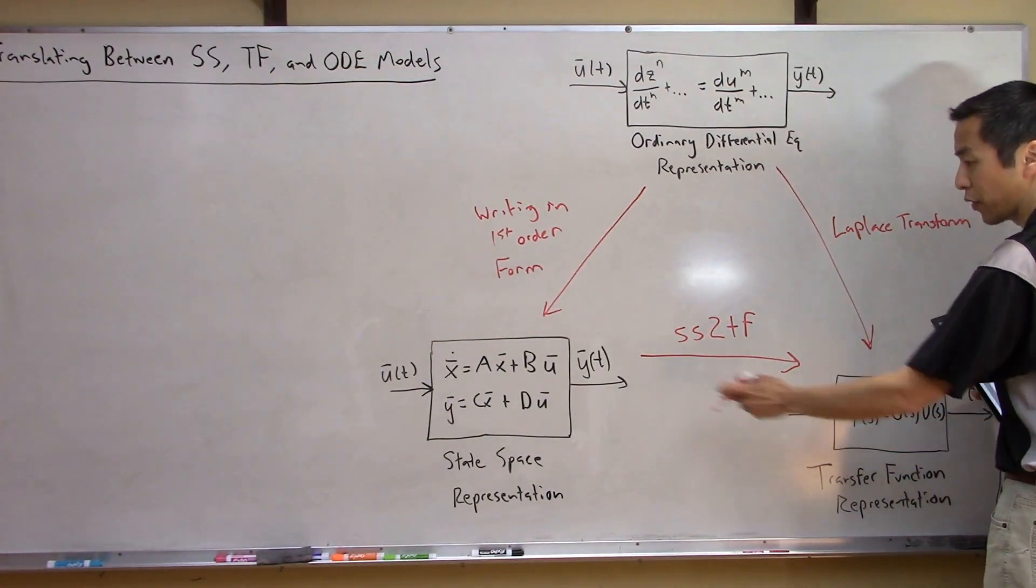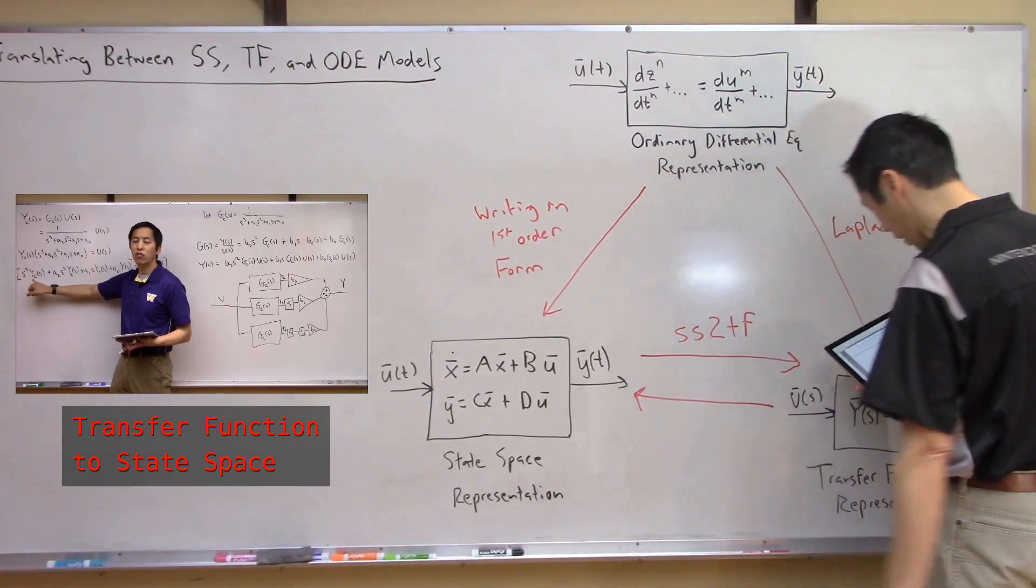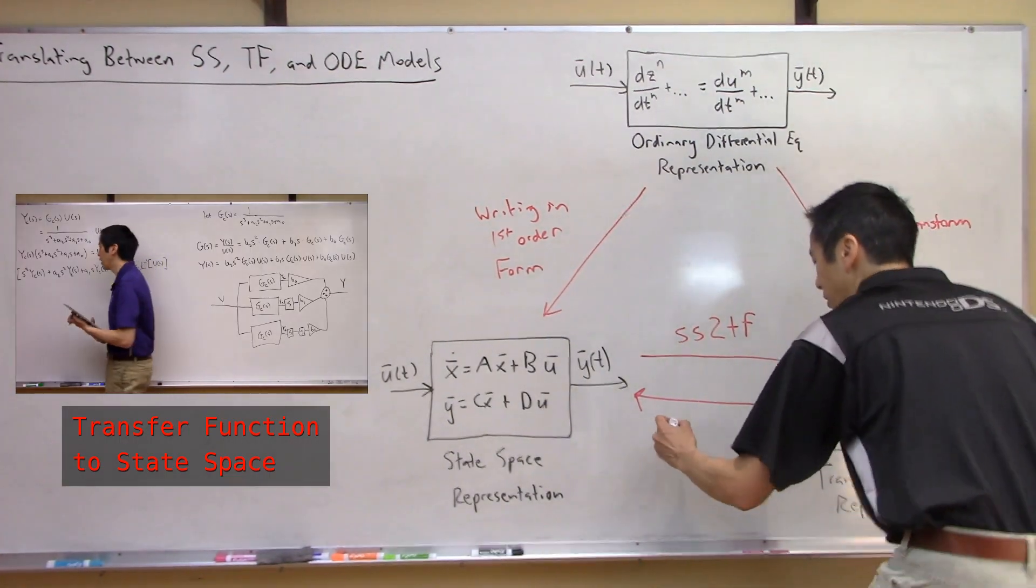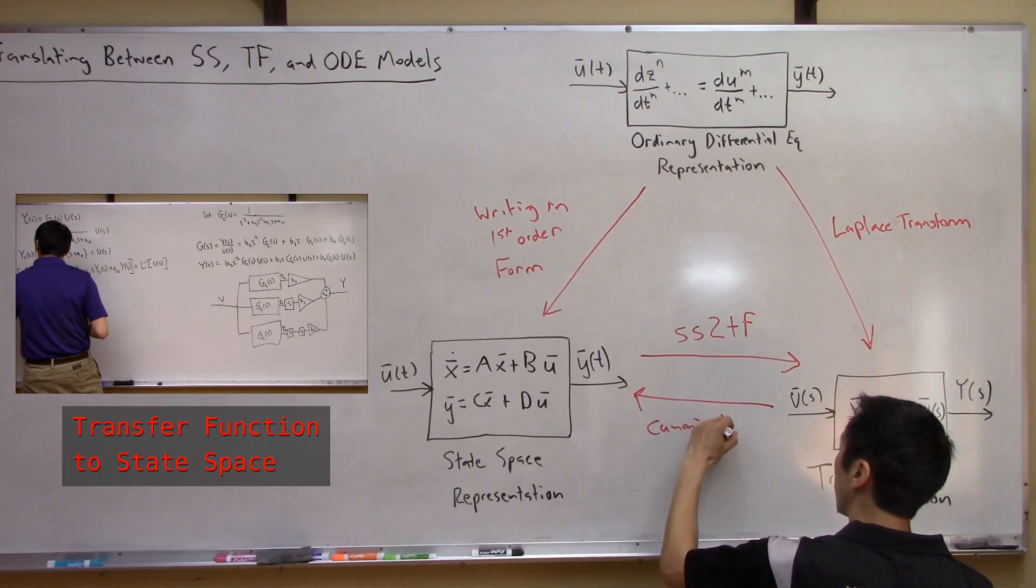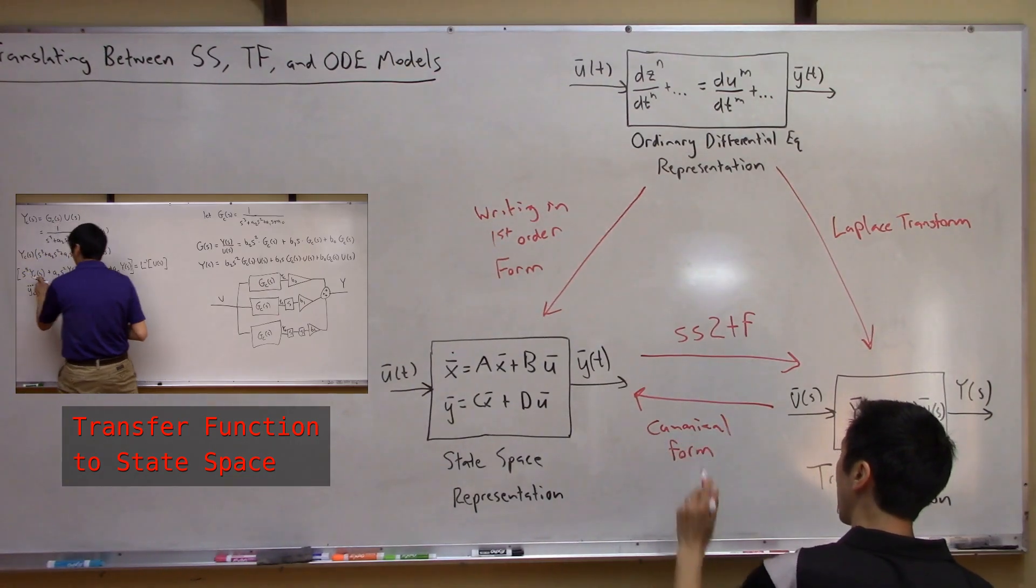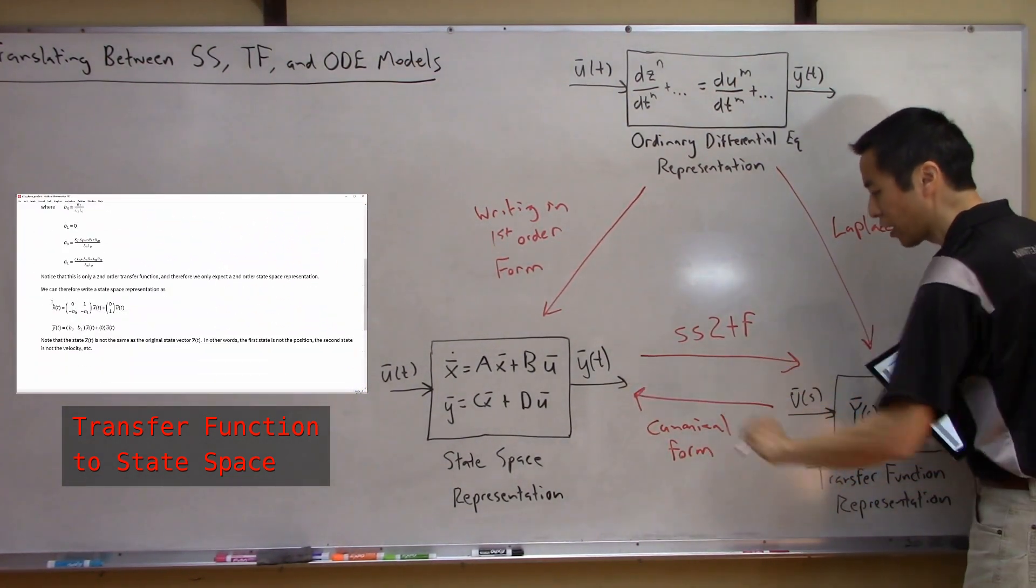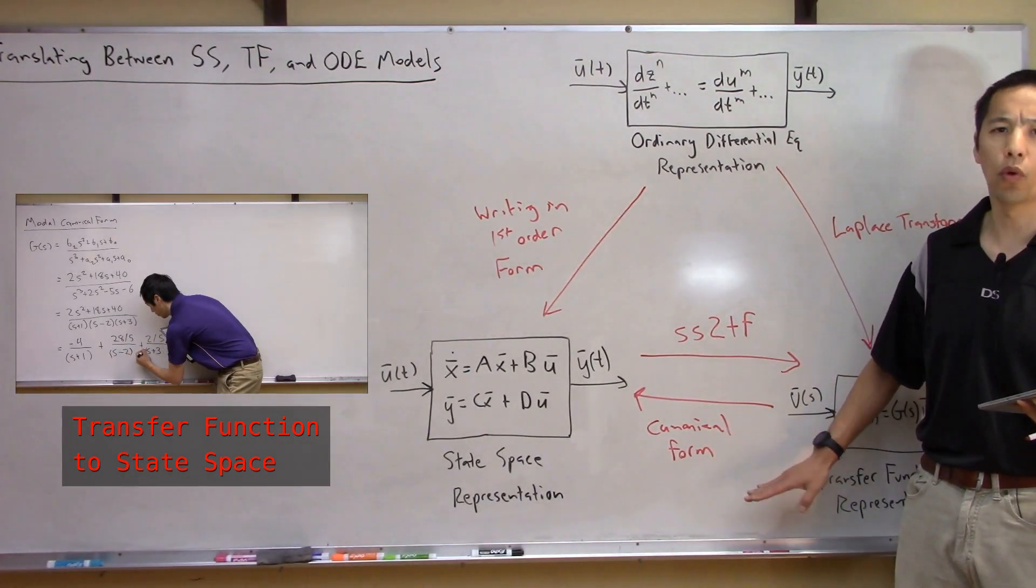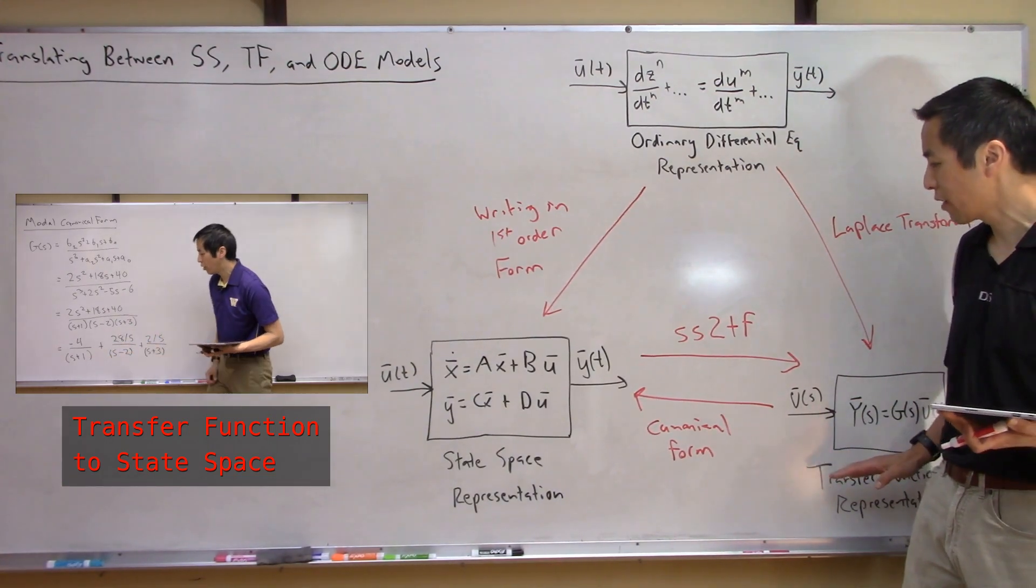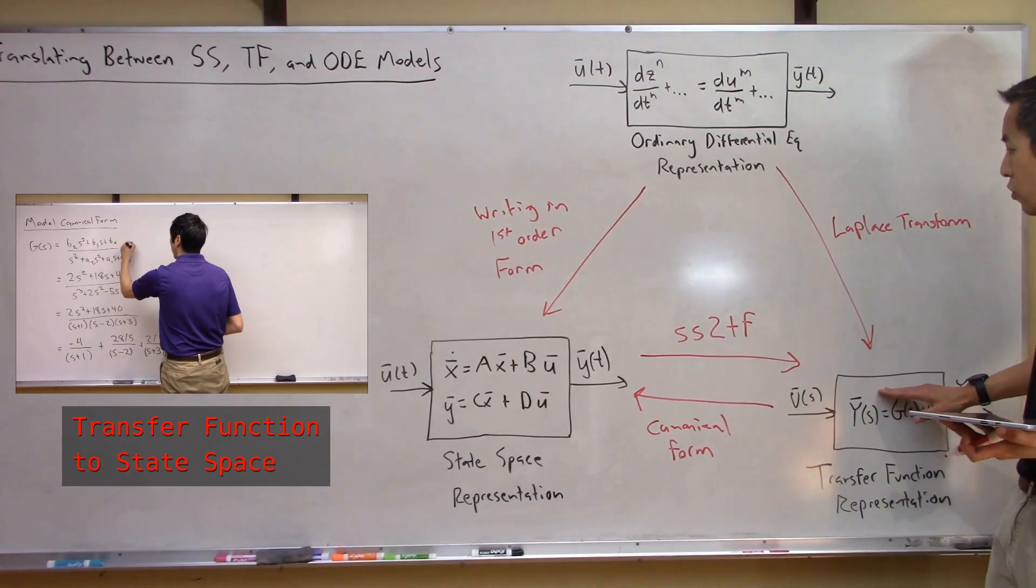Also you could go in the opposite direction. What if you had a transfer function and wanted to realize a state space representation so let's go the other way. Okay so this is basically writing it in different sort of canonical forms right and again we had a dedicated video going from transfer function to state space representation and you saw that you can use controllable canonical form, control canonical form, observable canonical forms. There's different ways that you can realize a state space representation if someone hands you a transfer function.